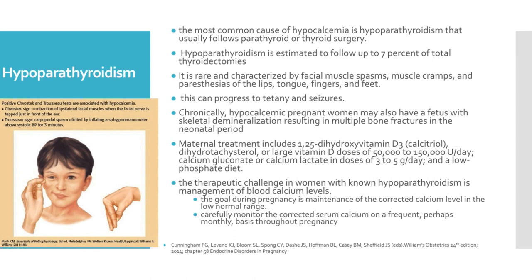The most common cause of hypocalcemia is hypoparathyroidism that usually follows parathyroid or thyroid surgery. Hypoparathyroidism is estimated to follow up to 7 percent of total thyroidectomies. It is rare and characterized by facial muscle spasms, muscle cramps, and paresthesia of the lips, tongue, fingers, and feet, and this can progress to tetany and seizures. Chronically, hypocalcemic pregnant women may also have a fetus with skeletal demineralization resulting in multiple bone fractures in the neonatal period. Maternal treatment includes 1,25-dihydroxyvitamin D3 or calcitriol, dihydrotachysterol or large vitamin D doses of 50,000 to 150,000 units per day, calcium gluconate or calcium lactate in doses of 3 to 5 grams per day, and a low phosphate diet.